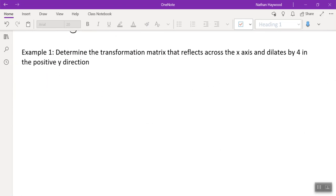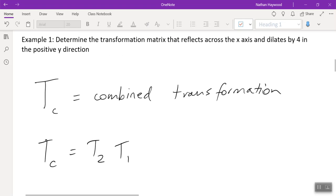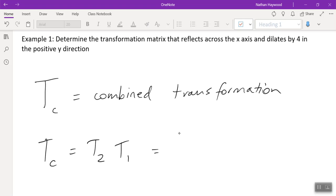The first example I'm going to do for you, we're going to reflect across the X axis and we're going to dilate by four. I'm going to find the combined transformation matrix. So you can write T or you can write T subscript c for combined transformation. So T_c is always the second transformation multiplied by the first. Please take note of the order. The second multiplied by the first.